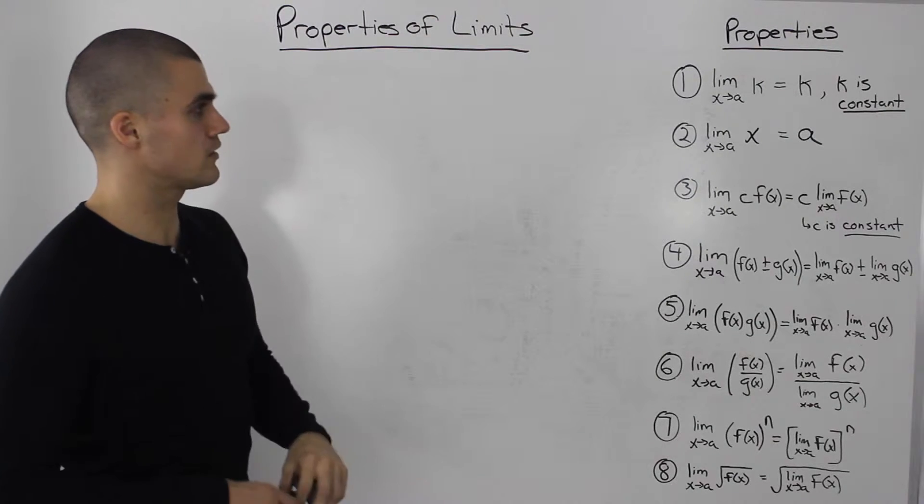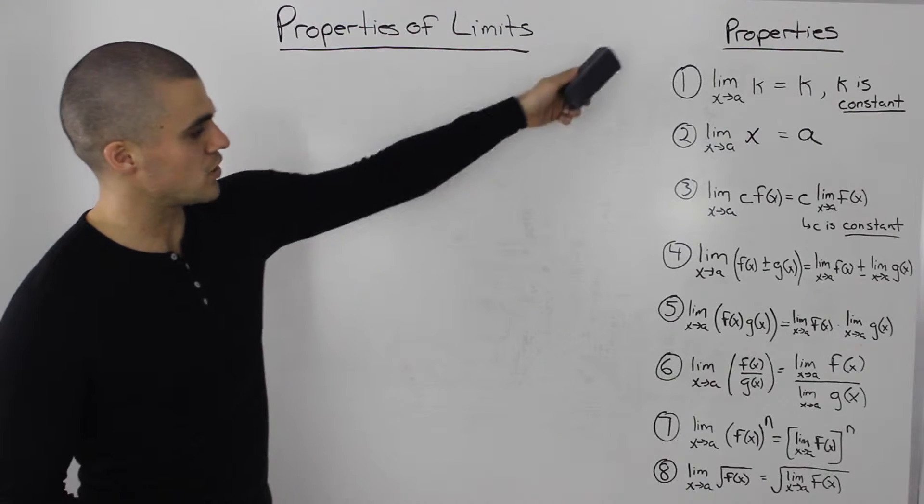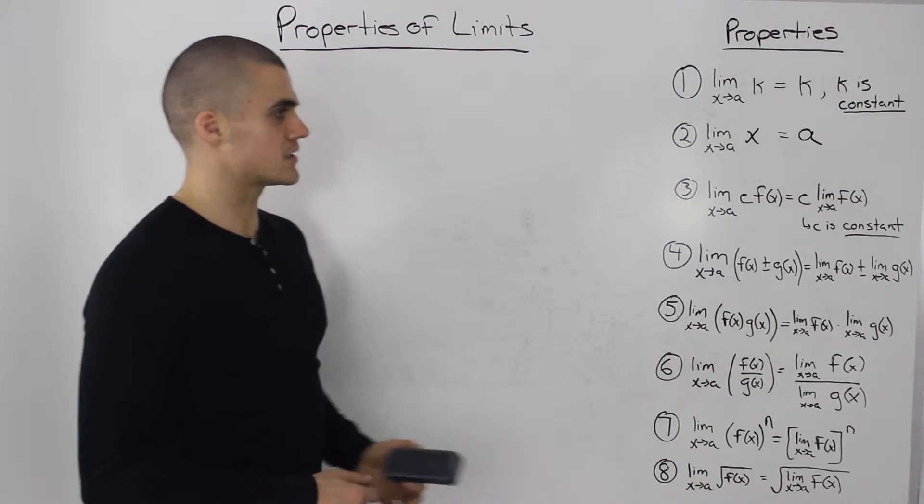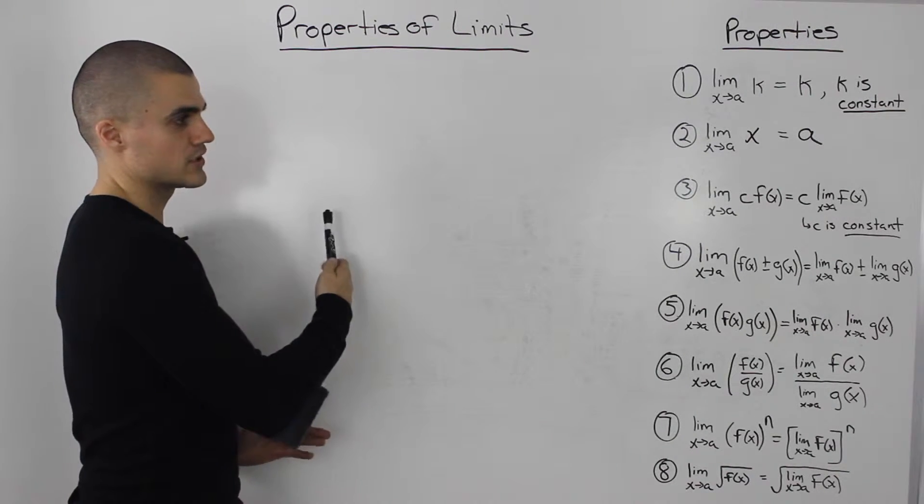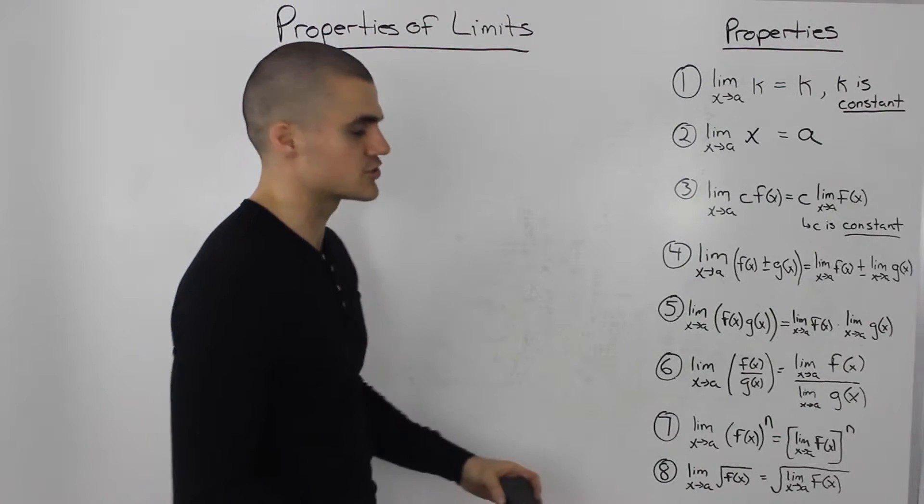Now we'll be dealing with the properties of limits and I wrote down eight properties here on the side. The reason why I wrote them out on the side is because we're going to be doing examples and when we'll be doing the examples I'll be referring to the properties. So this list of properties you could also find in your textbook.